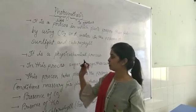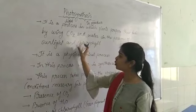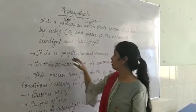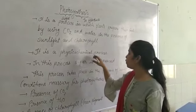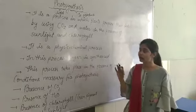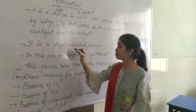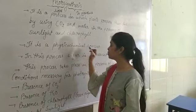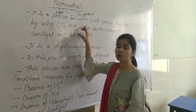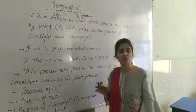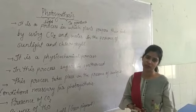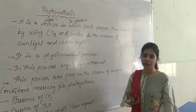This photosynthesis process is a physicochemical process. It is called a physicochemical process because in this process, a number of physical terms are also utilized and a number of chemical reactions also take place.